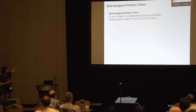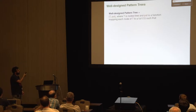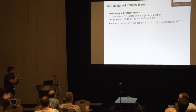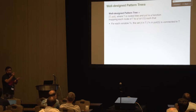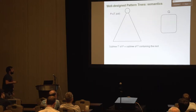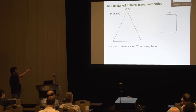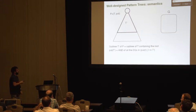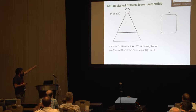A well-designed pattern tree is a pair: T, which is a rooted tree, and a function that maps each node t to a full conjunctive query. There is also a connectivity property saying that for all variables, if we look at the nodes containing those variables, they form a connected subtree. The semantics uses sub-trees T' of T containing the root, and the full conjunctive query path(T') contains all the atoms that appear in the tree.